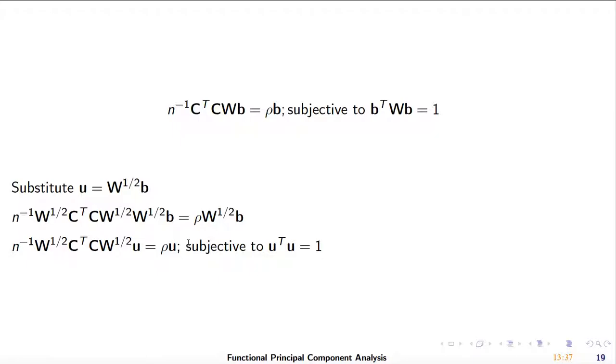So we try to solve these equations. In this case, U will be just the eigenvector of the matrix in the front. Then we can find the eigenvectors of this matrix, and then we'll know U. After we know U, then B will be just W^(-1/2) times U. B is the vector of coefficients to the basic function for the W_t, the FPC. This is the idea of how we can calculate the functional principal components.